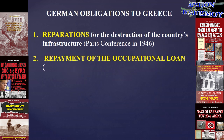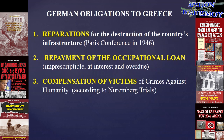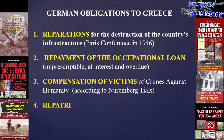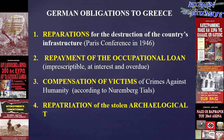Second, repayment of the occupational loan, which is imprescriptible in perpetuity at interest and overdue. Third, compensation of victims of crimes against humanity, according to the Nuremberg trials. Fourth, repatriation of the stolen archaeological treasures.